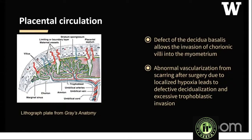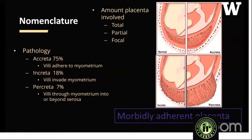The trophoblastic proliferation leads to formation of the chorionic villi. If the underlying endometrium is deficient, decidualization fails and the trophoblast or chorionic villi invade and penetrate the myometrium. This abnormal vascularization can be due to scarring after surgery, which leads to hypoxia and defective decidualization and excessive trophoblastic invasion.